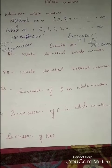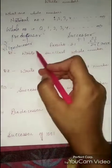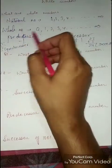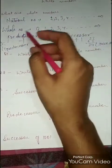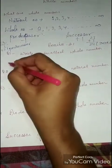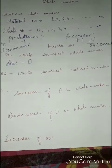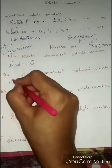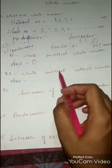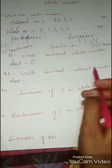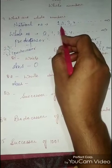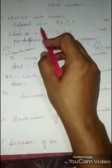Exercise 2.1, question number 1: Write the smallest whole number. The smallest whole number is zero. Next, write the smallest natural number. Natural numbers are numbers which start from one up to infinity, so the smallest natural number is 1.